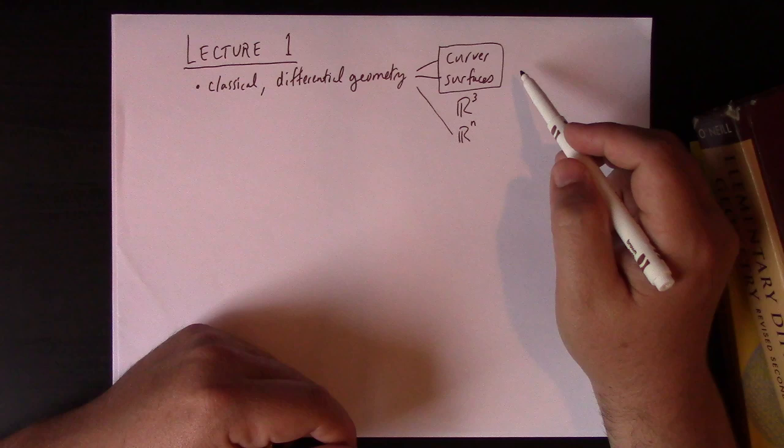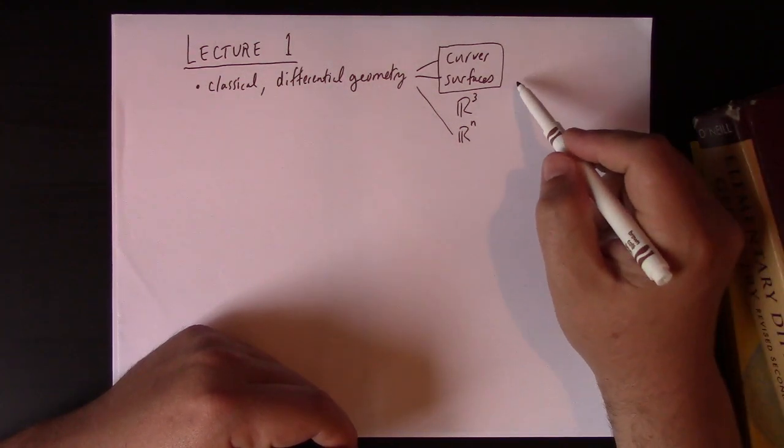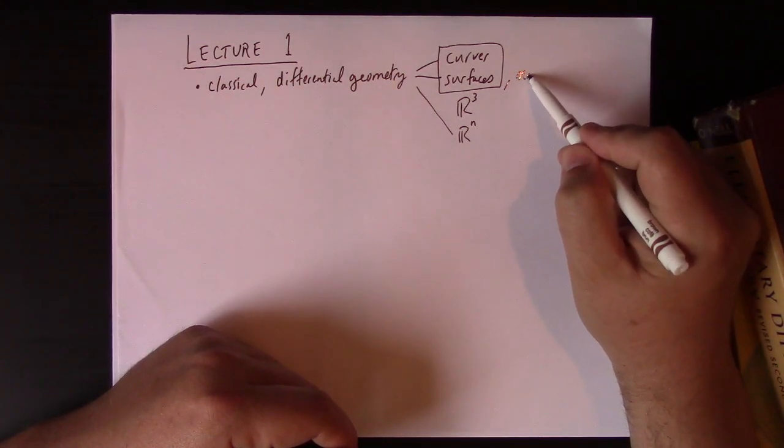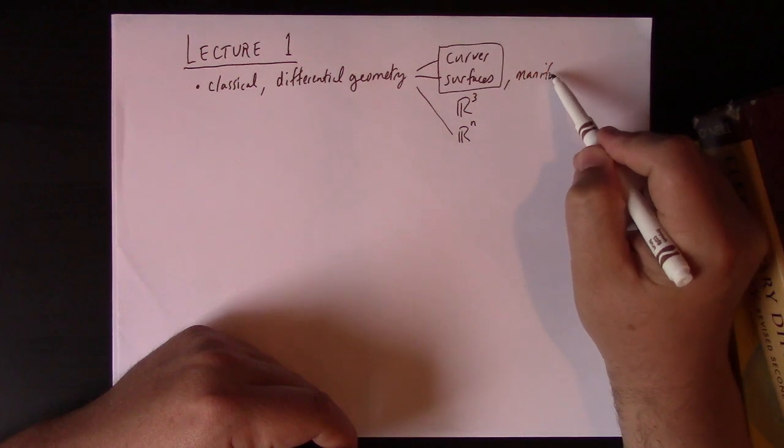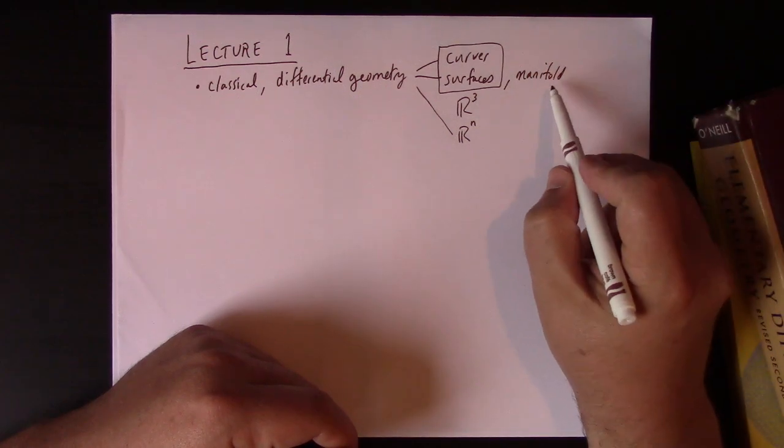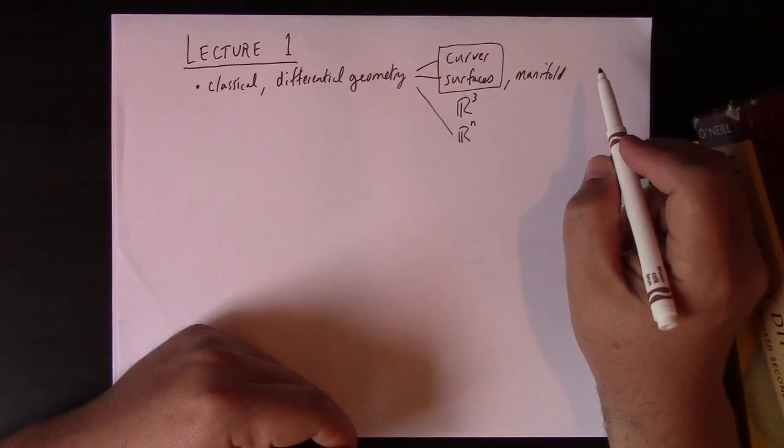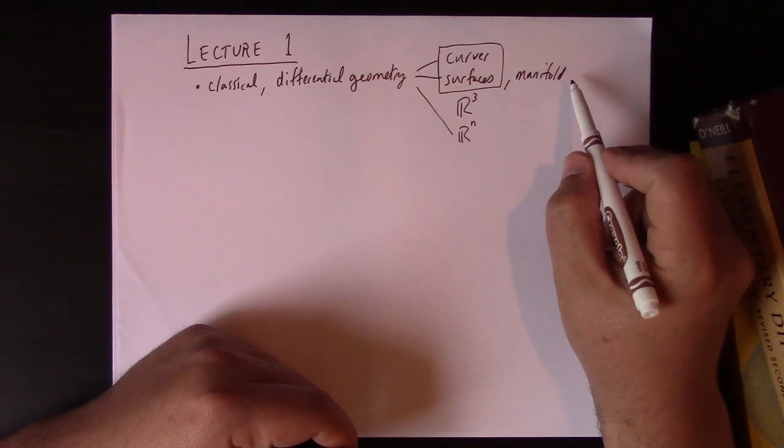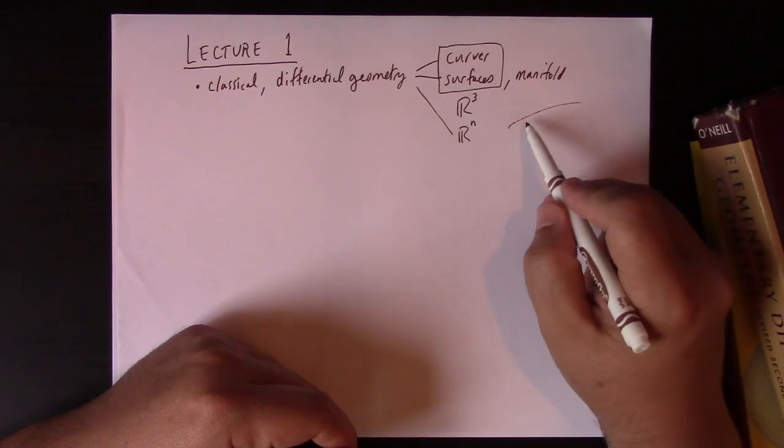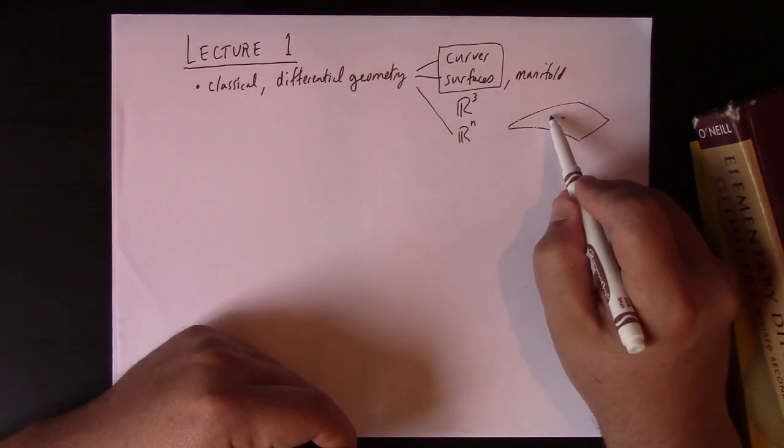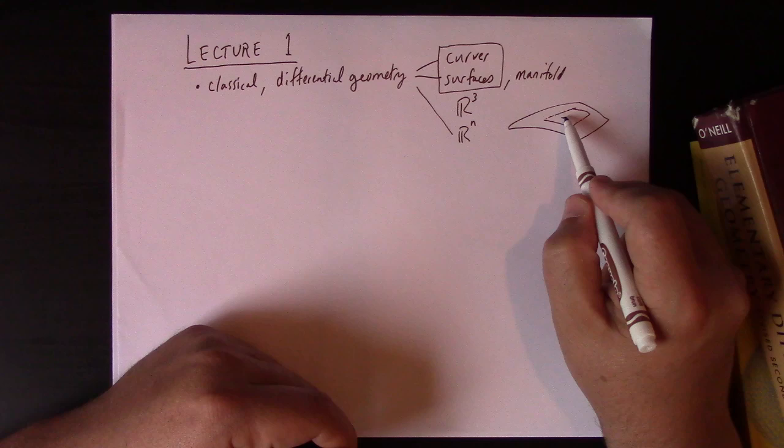That leads us to the study of, a lot later, what's called manifold theory. A manifold is simply an abstract set essentially where you can do calculus, and we're going to look at those later. Basically locally this looks like Rⁿ if you kind of zoom in close enough. But that's not even quite the right picture.